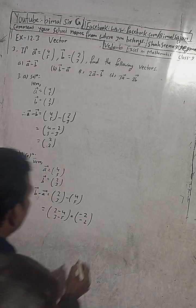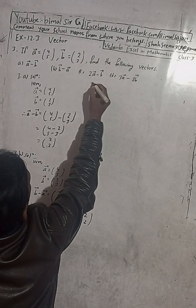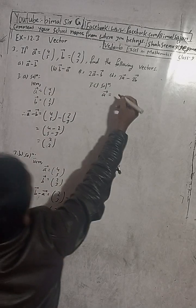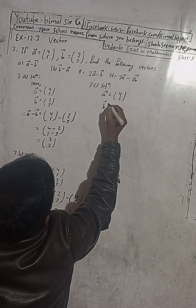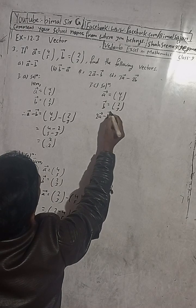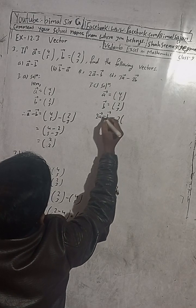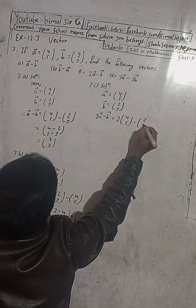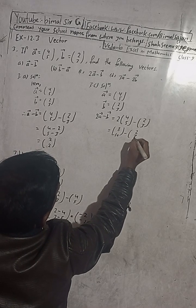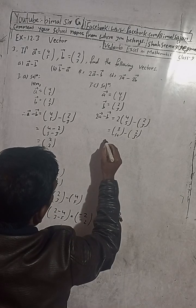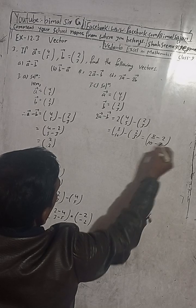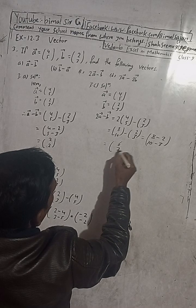Now see part C solution. We have to find 2A vector minus B vector. So first, A vector is equal to (4,5), B vector is equal to (2,3). So now we have to find 2A vector minus B vector. So first of all write, 2 times A vector equals (4,5), minus B vector equals (2,3). This equals (8,10) minus (2,3). Now we can write, 8 minus 2, 10 minus 3. So this is equal to (6,7).